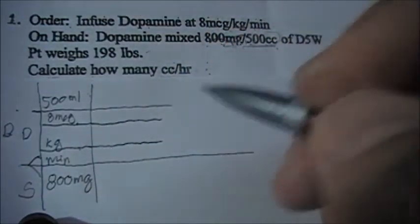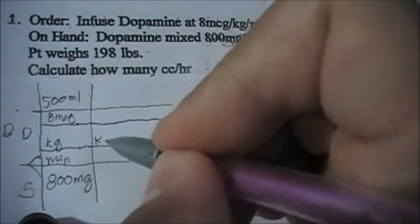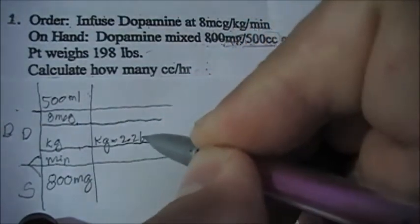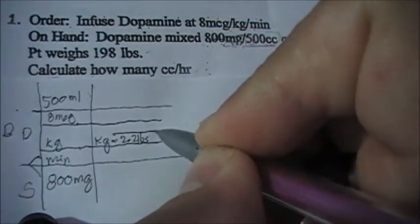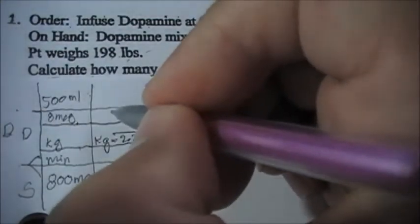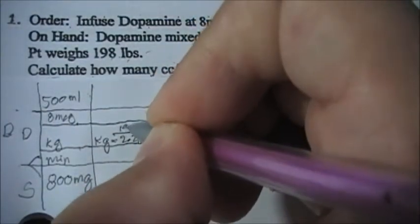One kilogram is how many pounds? Equals 2.2 pounds, right? So 2.2 pounds. And what you're given, what's the patient weight? It is 198 pounds, so we put 198 pounds here.